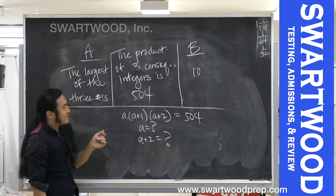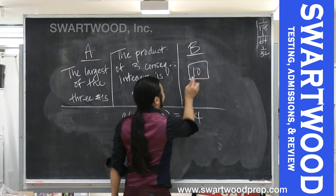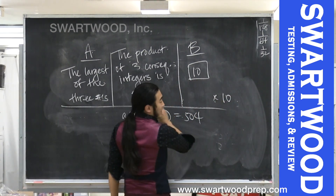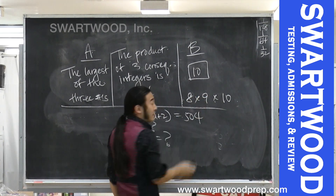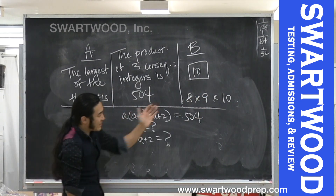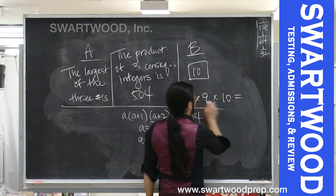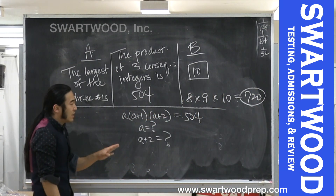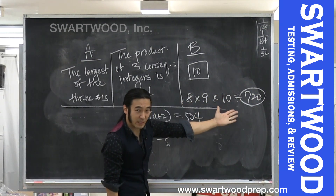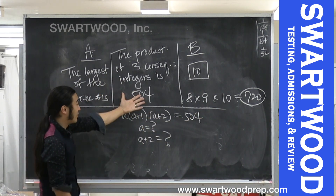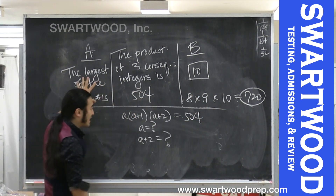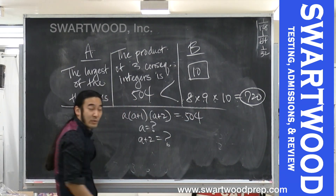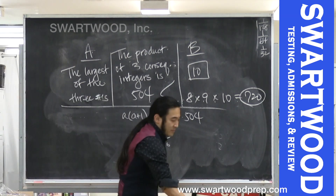Instead, the strategy is to work with something concrete — the number 10. If 10 were the largest of three consecutive integers, the other two would be 9 and 8. So the product would be 8 × 9 × 10 = 720. But our actual product is 504, which is much less than 720. That means the largest integer must be less than 10, so Column B wins.